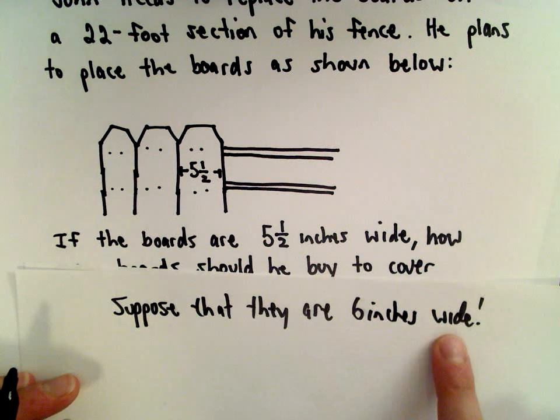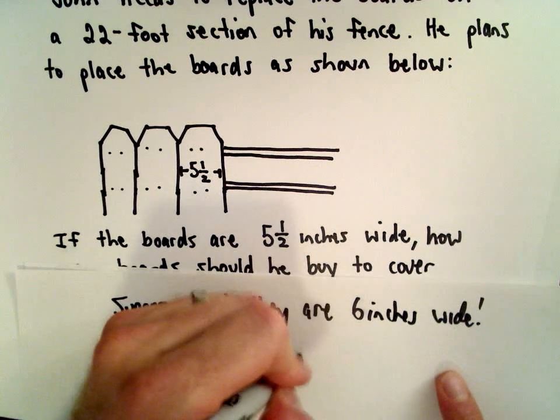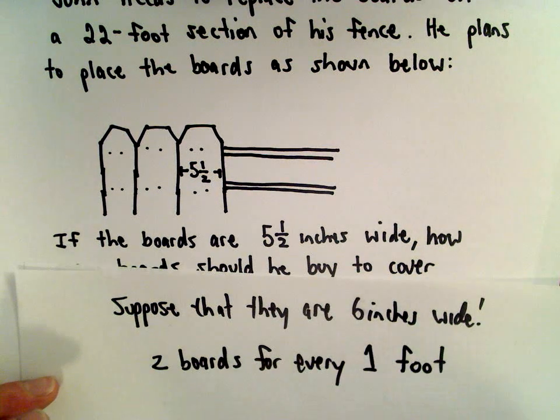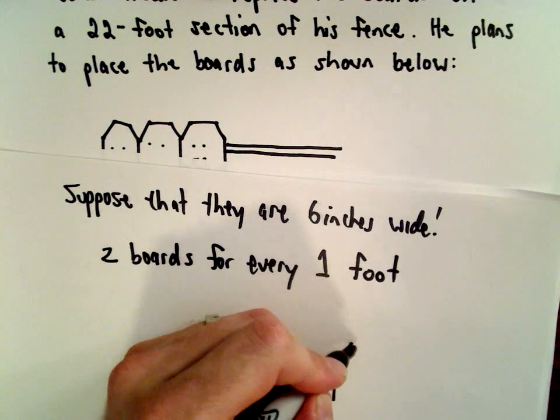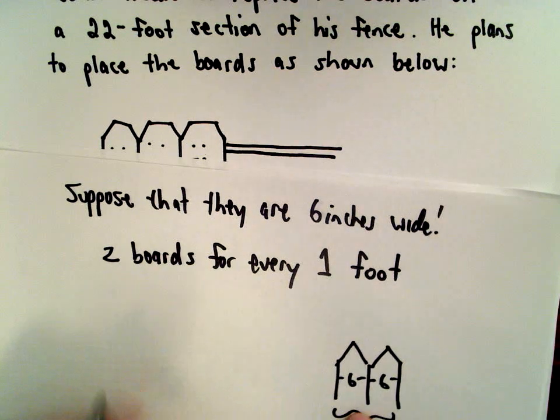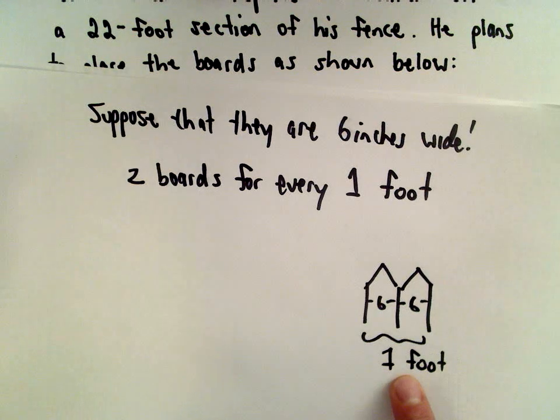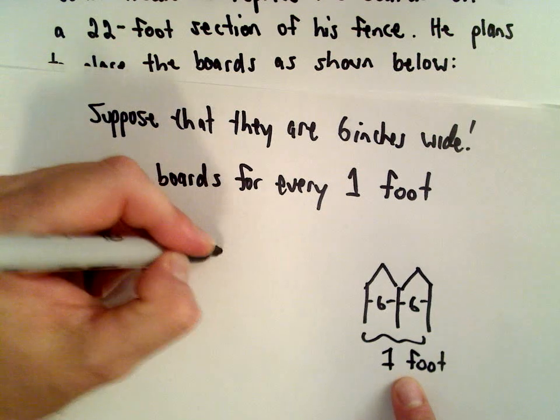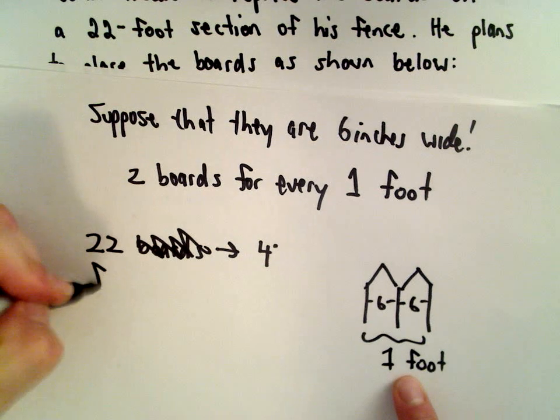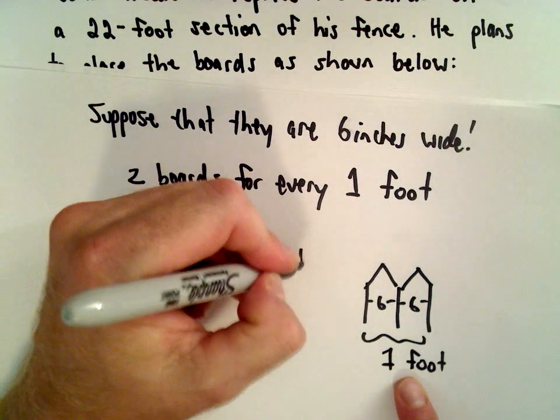Well, if the boards are six inches wide, that means you're going to need two boards for every one foot, right? Because there's 12 inches to one foot. So if they were six inches long each, well now two boards equals one foot. So there's two boards for every one foot. Well, if it's 22 feet long, that means I'm going to double that and get 44 boards.